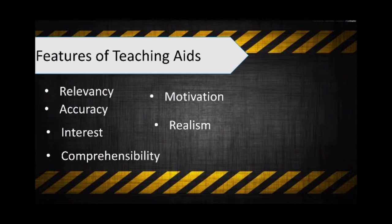Comprehensibility — in selecting and using visual aids, we must try to choose those things which relate new experience with past experience and which are within the comprehension of the students who are to use them. Motivation — audiovisual aids motivate learners as they make the learning process in the classroom interesting, especially in activity-oriented subjects. Realism — a visual aid must possess the quality of developing real concepts of things.